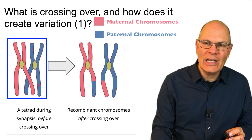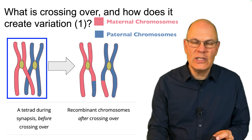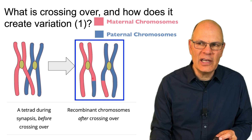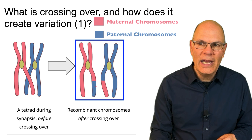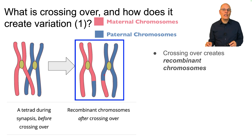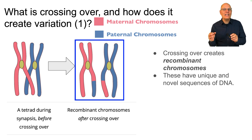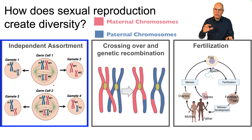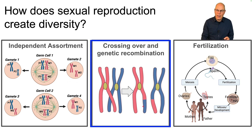The result is that you start with this array of four sister chromatids called a tetrad. This is what it looks like before crossing over, and then after crossing over it looks like this. You'll notice this isn't really a maternal chromosome anymore — it's a maternal chromosome with a paternal piece, and the same for the other one. Crossing over creates what are called recombinant chromosomes, which have unique and novel sequences of DNA. The two engines of diversity are independent assortment, which randomly arrays different combinations of chromosomes in the gametes, and crossing over and genetic recombination, which creates uniquely recombinant chromosomes.